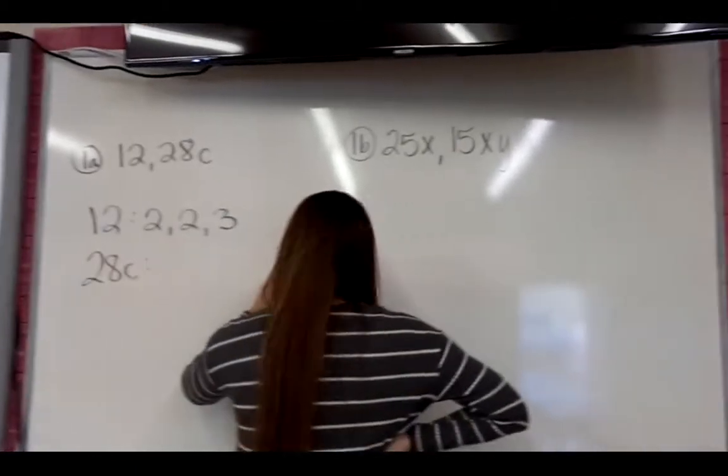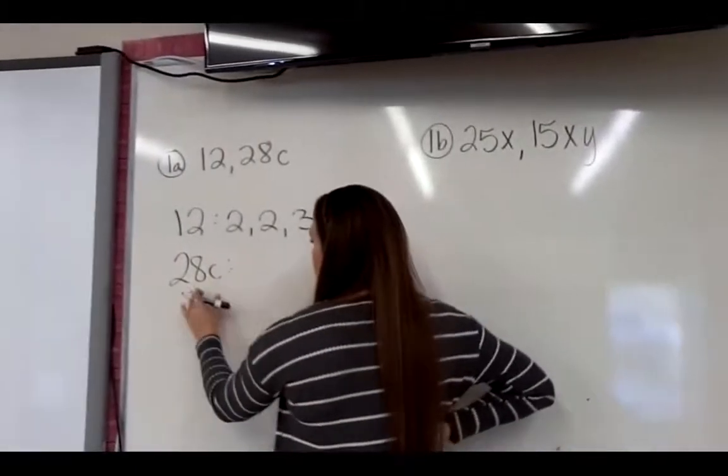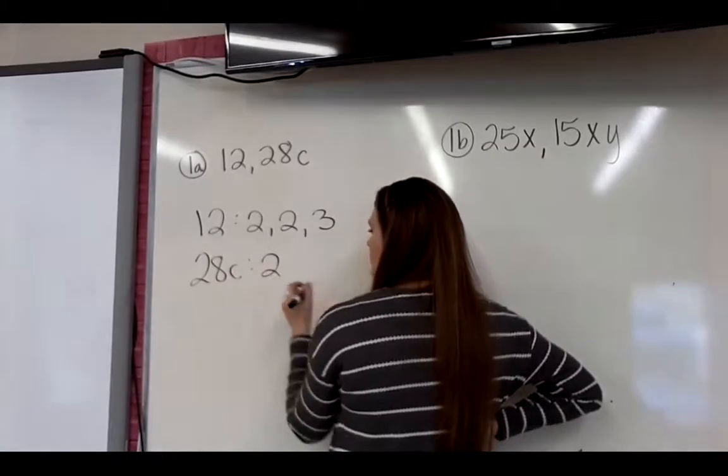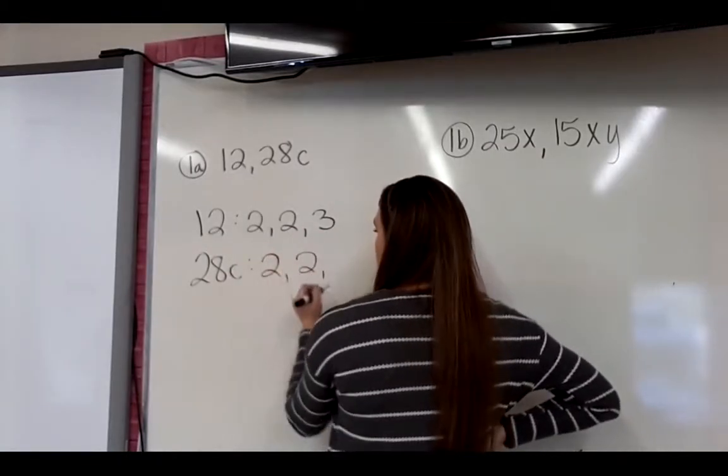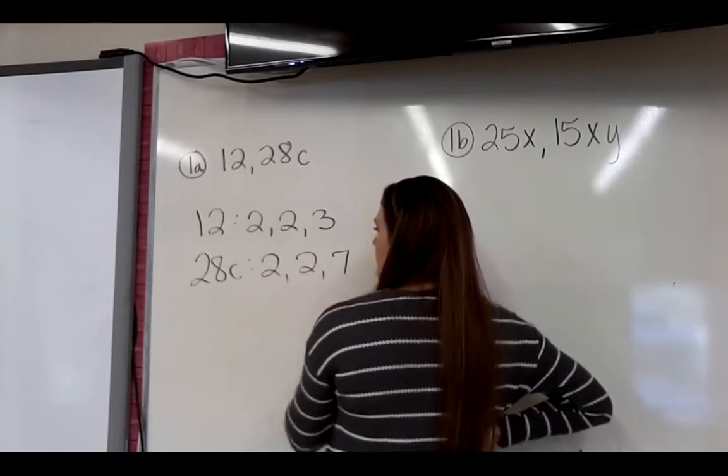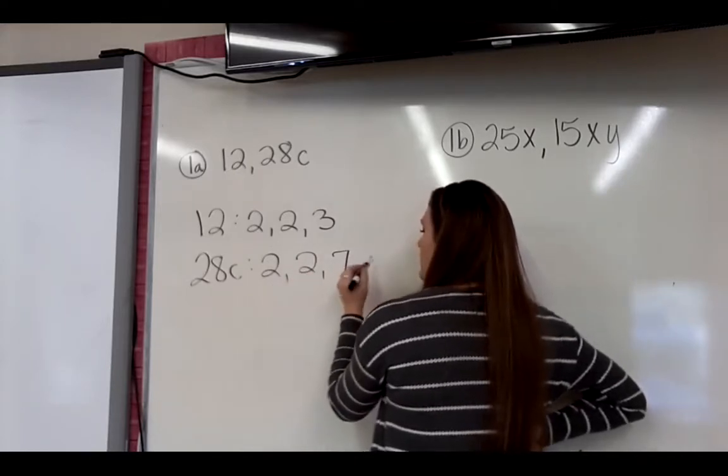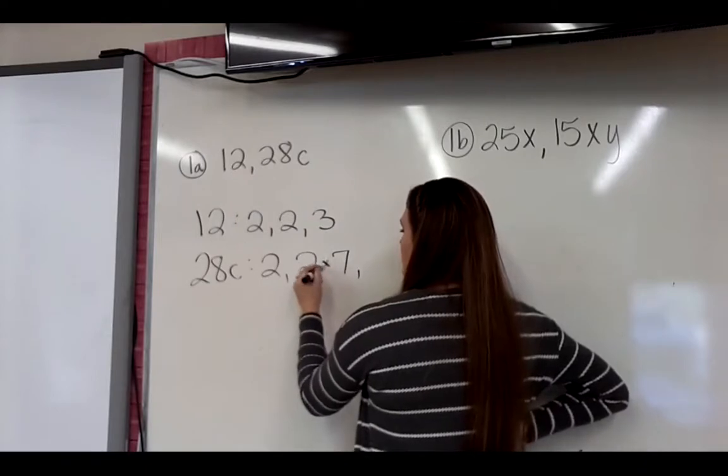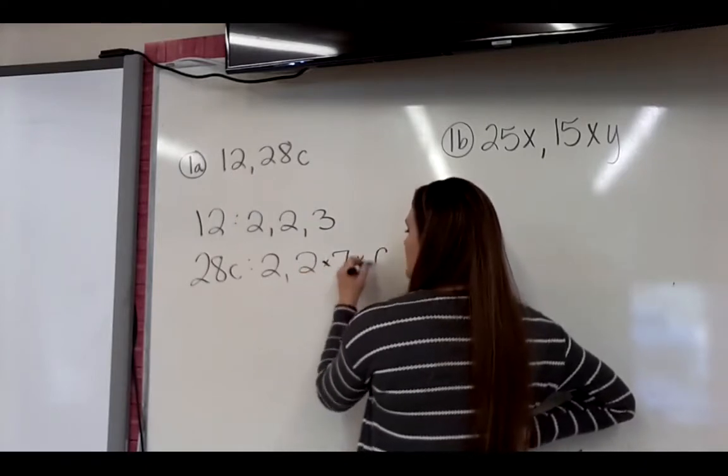So now I do it with 28c. So we just look at 28. 2 times 14. 14 can be divided by 2 again, which is 2 times 7. 7 is prime. So 2 times 2 is 4. 4 times 7 is 28. And then I have, I guess technically I could put times between all these. And then c.